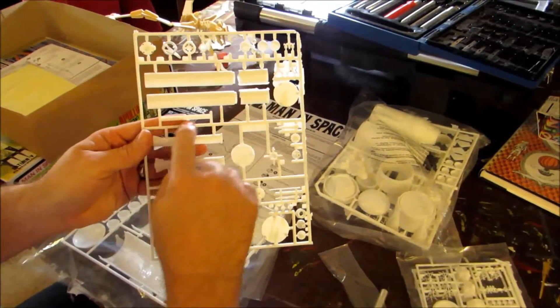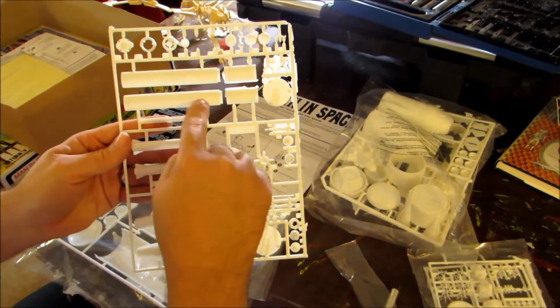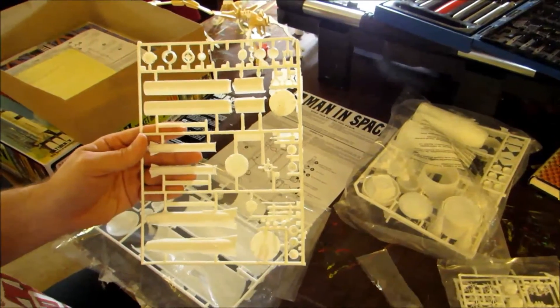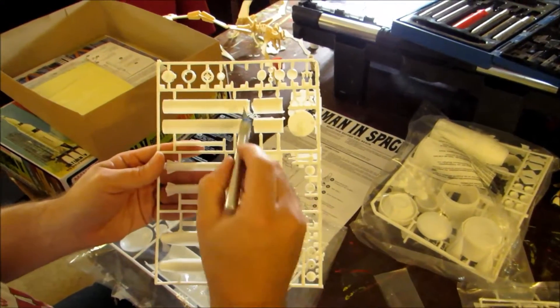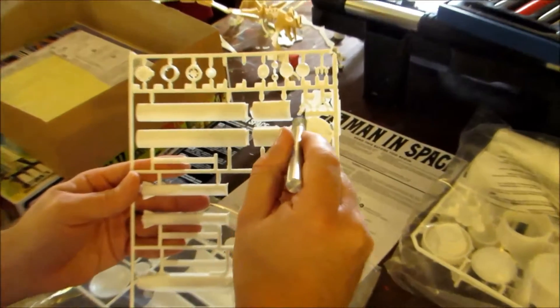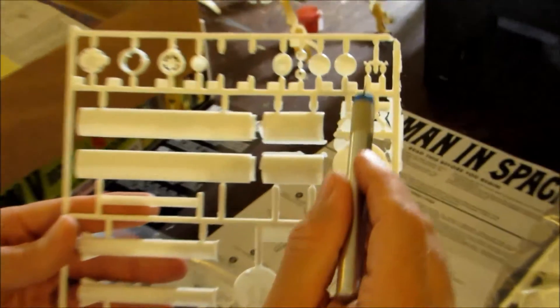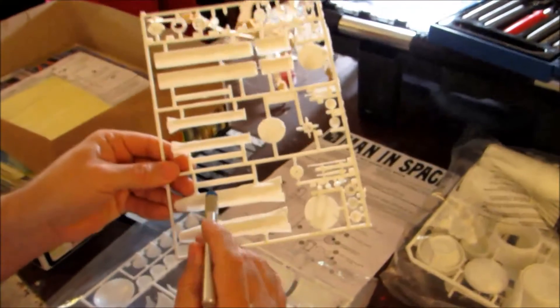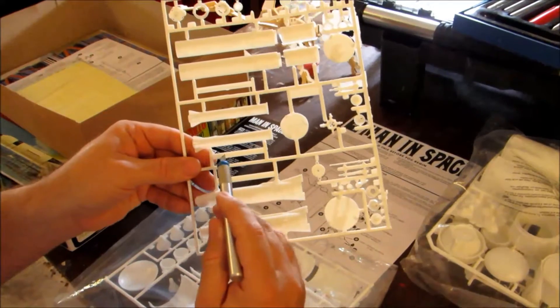The trees are labeled Gemini Titan. You do have some sprue, some bleed over that you're going to have to trim out. These smaller pieces of course you're going to have to be real careful with because they will break. You have your Atlas Mercury here. Your Mercury Redstone.